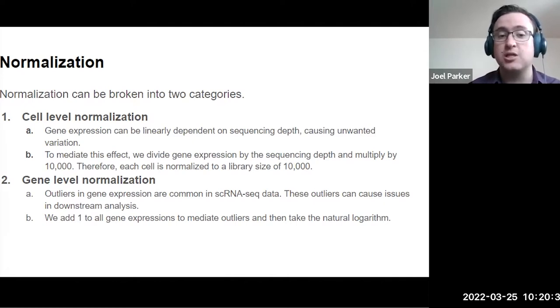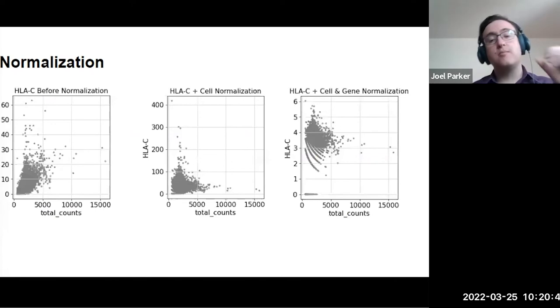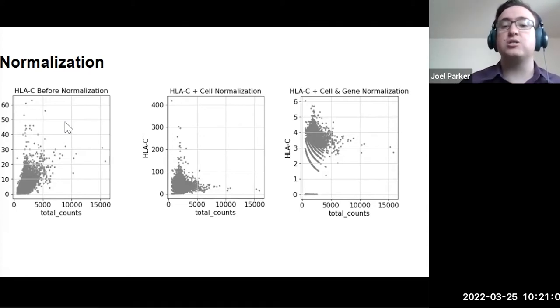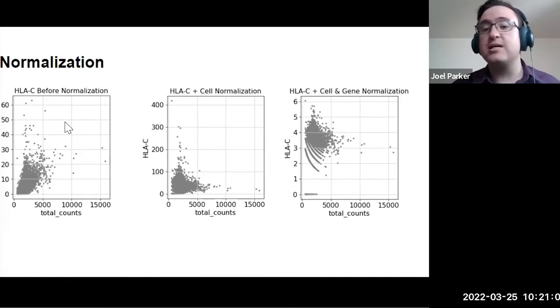Cell level normalization is important because gene expression can be linearly dependent on sequencing depth. A widely accepted method for cell normalization is to divide gene expression by the total number of counts in the cell and then multiply that by 10,000. Gene normalization is also essential for reducing the bias. Unfortunately, outliers in single cell RNA sequencing are common and failure to address this can lead to more noisy data. In the Shunpiker app, we take the natural log of all the counts to reduce the effect of outliers. However, since our data consists of many zeros, we add one to all of these counts prior to taking the natural logarithm.